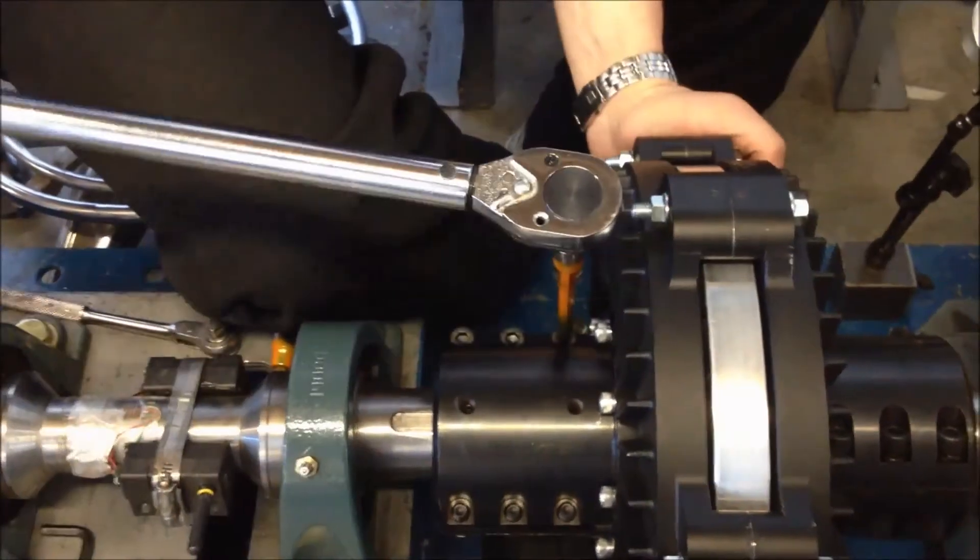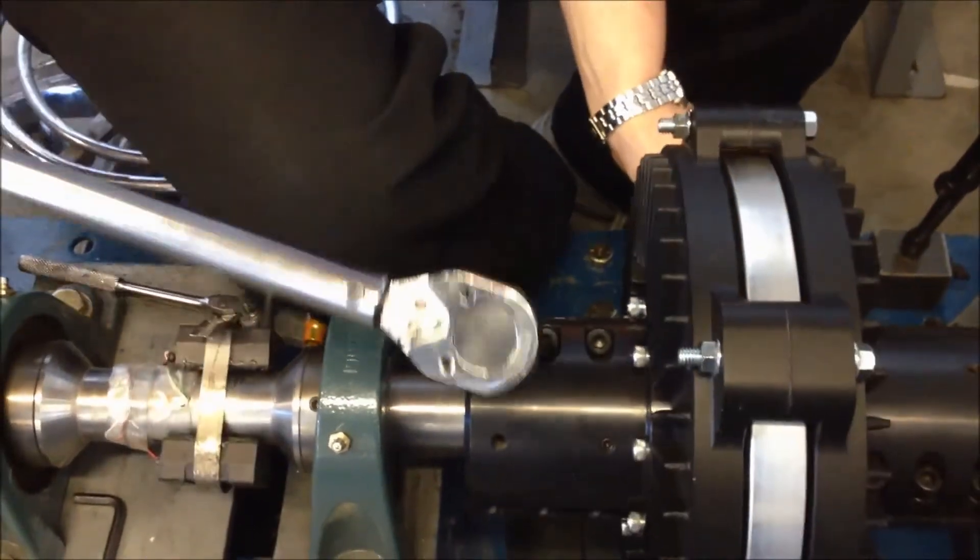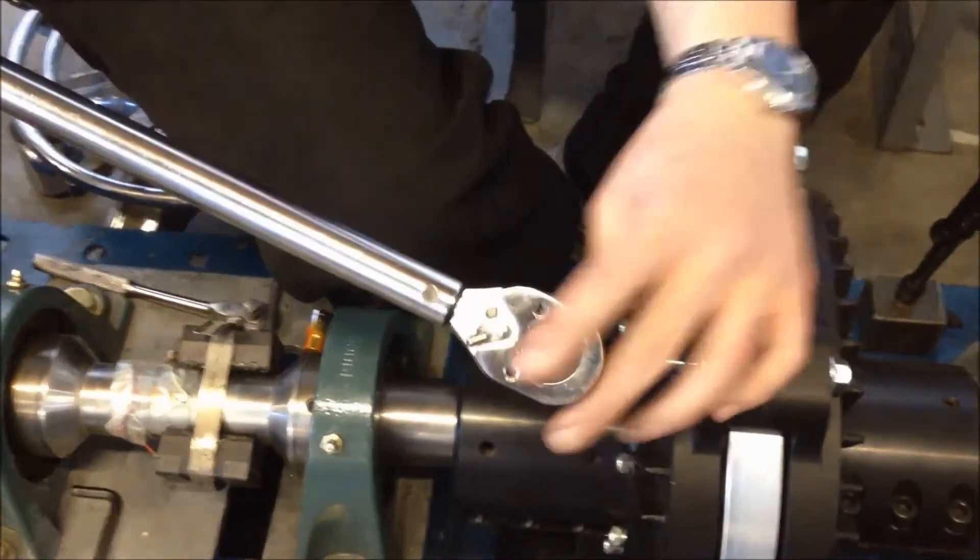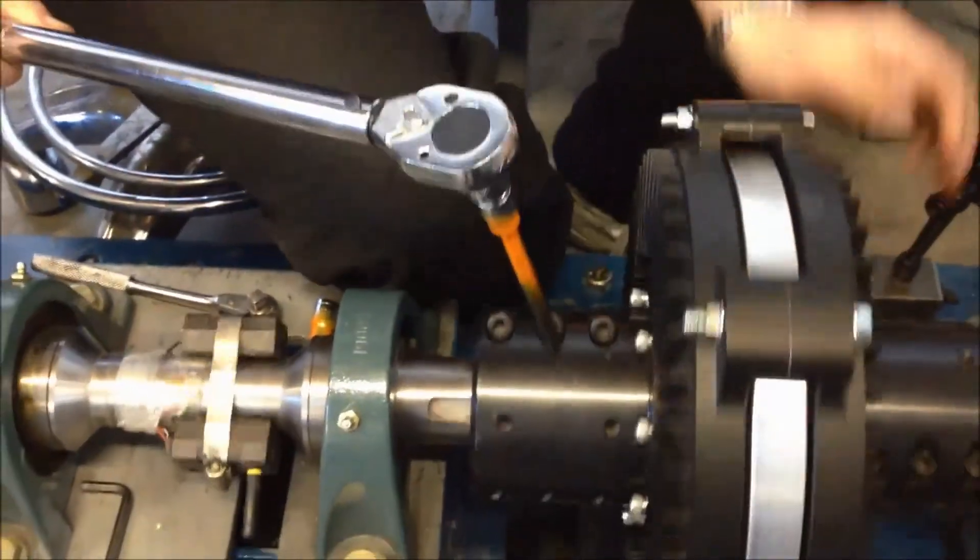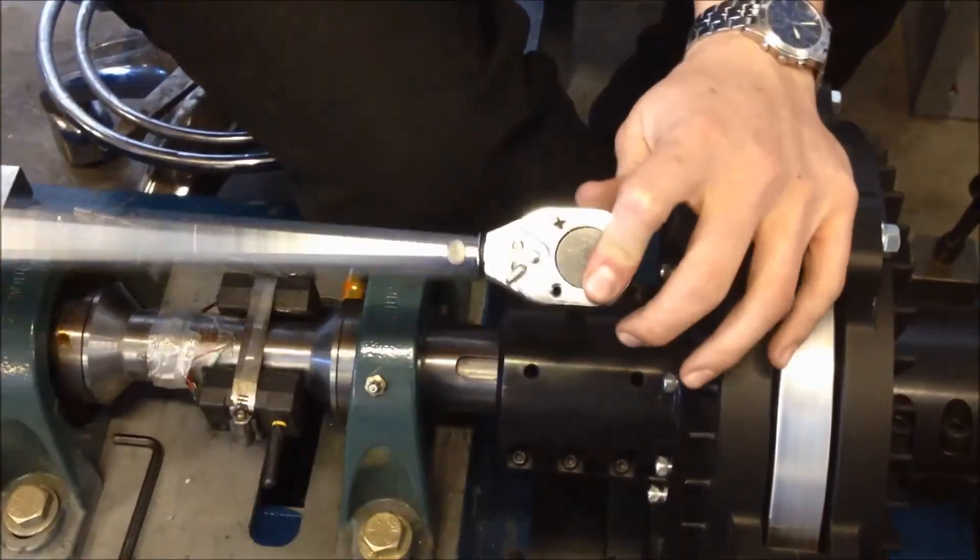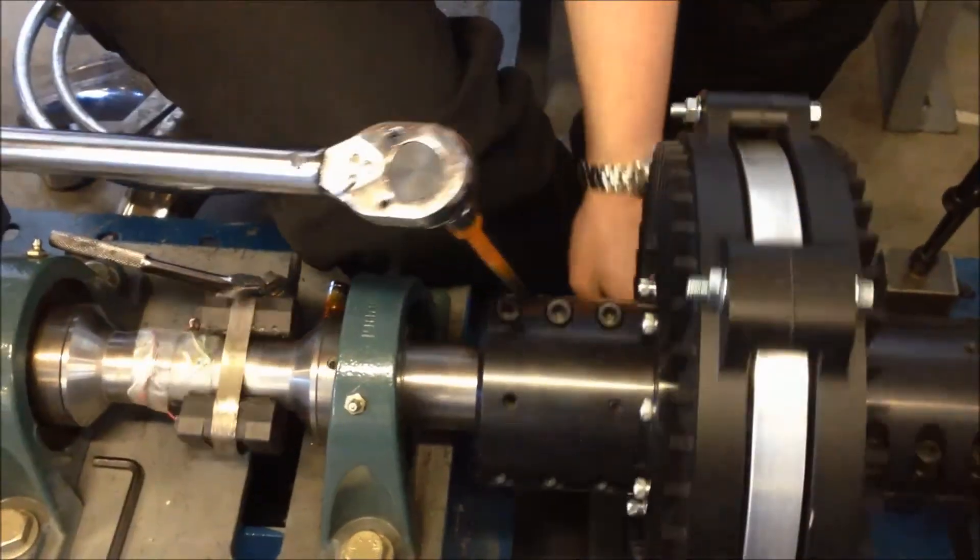Tighten the six clamp bolts on the load side hub in an alternating pattern. Torque the bolts to the specified torque outlined in the instruction guide supplied with the FSC coupling. Tighten the two set screws over the keyway last. Repeat this procedure for the motor side hub also.